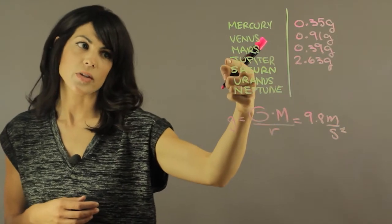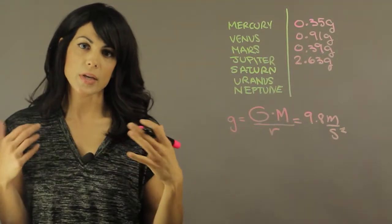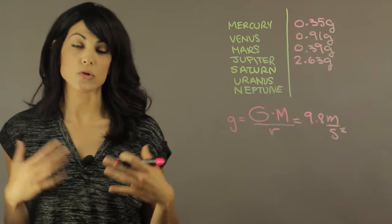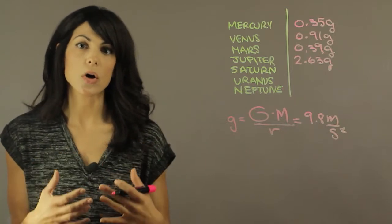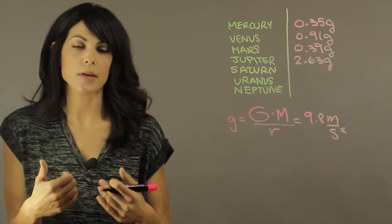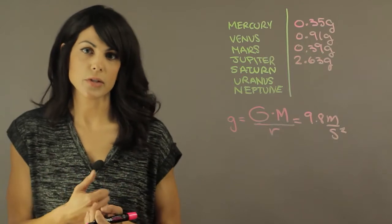As you can tell, now that we're moving towards the outer planets, because the mass of the outer planets is so much larger, you'll actually end up having a stronger surface gravity because the more mass you have, the higher the gravitational force would be.